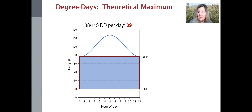One consideration is that while the model calculates a constant maximum development during this period, temperatures above 90 to 95 degrees are detrimental to codling moth development. If it were this high a temperature and sustained, we would start to see mortality.